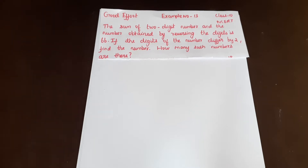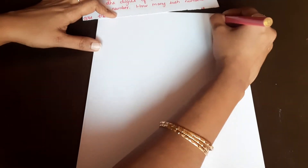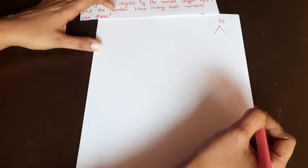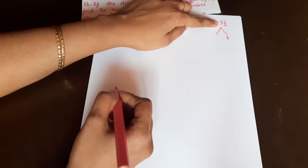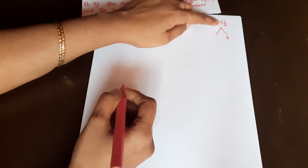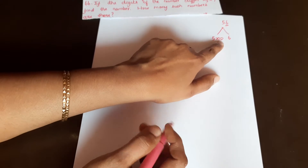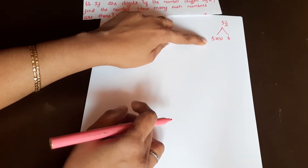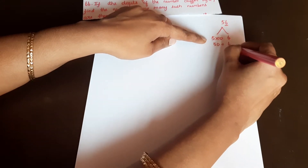In this problem, we will solve using the elimination method. The sum of the two-digit number and the number obtained by reversing the digits is 66. Let's take one example. Consider 56. In 56, the units place (ones place) has 6. The tens place has 5, so we write 5 into 10. Since there are 5 tens, that gives 50, plus 6 equals 56.